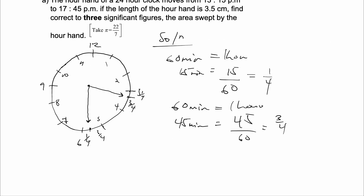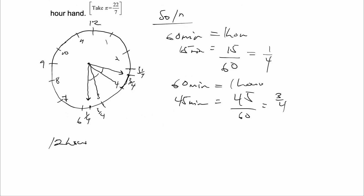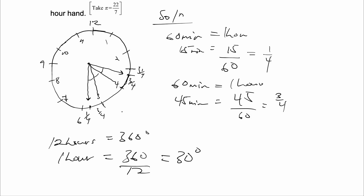So first we know that we have to find this angle. We need to find this angle, and this angle, and this angle. So 12 hours is 360 degrees — from 12 to 12 is one complete circle, so it's 360. Then 1 hour will be equal to 360 divided by 12, and that is 30 degrees. So 1 hour is 30 degrees. Now from 5 to 4 is 1 hour, which is 30 degrees. We don't know from this to this, but we know that from this to this is 3 over 4 of the angle here. So we find 3 over 4 of 30, and that will be 22.5 degrees.